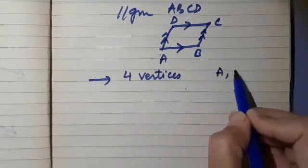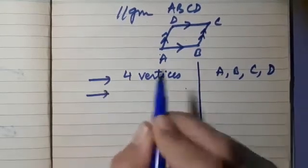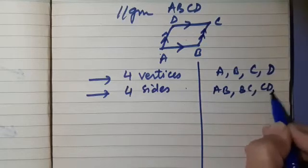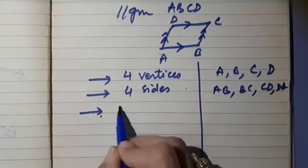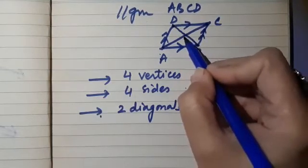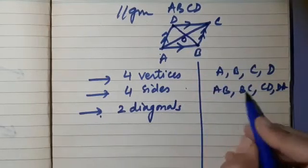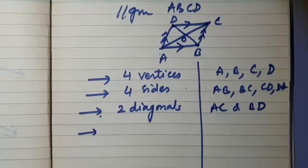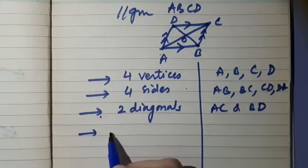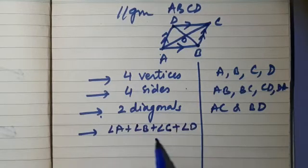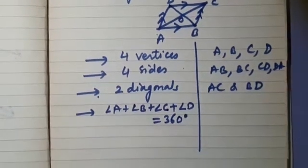It's a quadrilateral so it has four vertices: A, B, C, D. It has four sides: AB, BC, CD, DA. It also has two diagonals — we join AC and BD and they intersect at point O, giving diagonals AC and BD. As a quadrilateral, the sum of all interior angles is 360 degrees: angle A plus angle B plus angle C plus angle D equals 360 degrees.